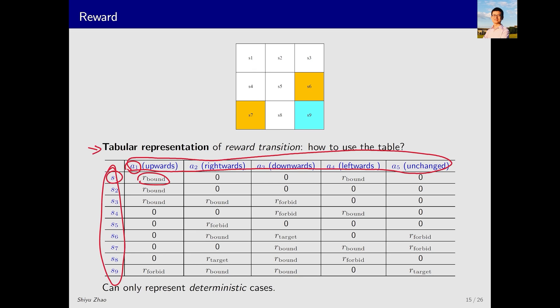Why? Because it can only represent deterministic situations. What does deterministic mean? It means that if you take an action in a state, it is certain to receive a specific reward. However, if the reward is stochastic, the tabular form no longer applies.